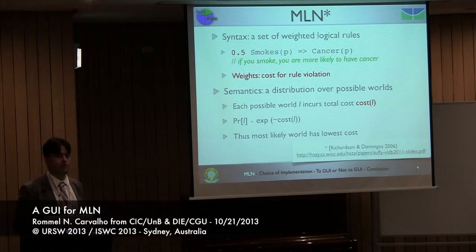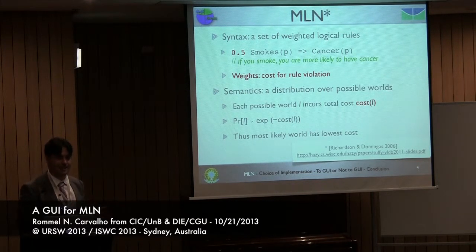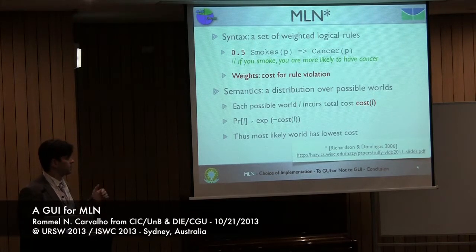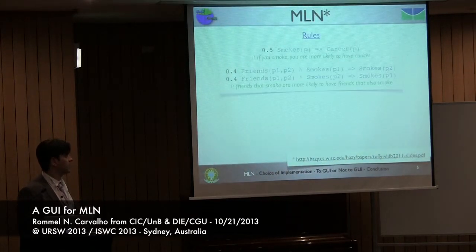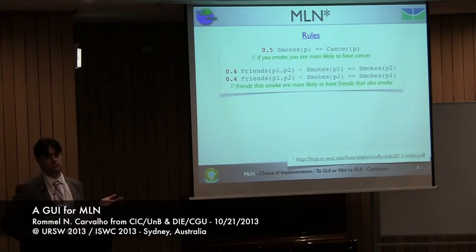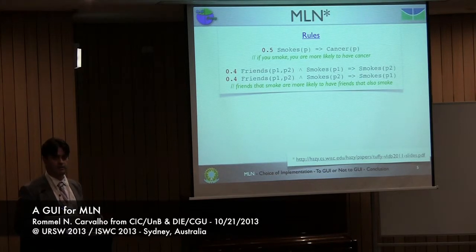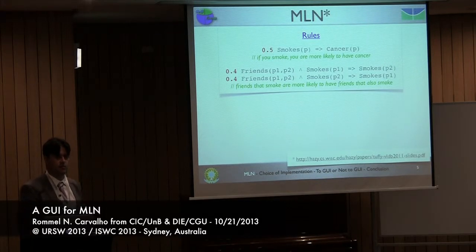In a really synthetic, one-slide kind of way, that's what it does. What's tough to see is that basically we have many different rules. One of the rules I just showed you; another one would be: friends that smoke are more likely that the other friend is also a smoker. So people that smoke tend to be friends.